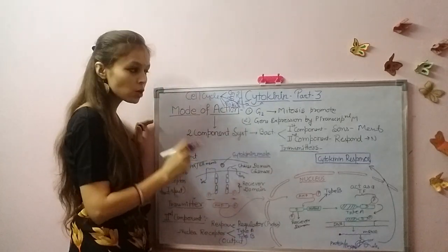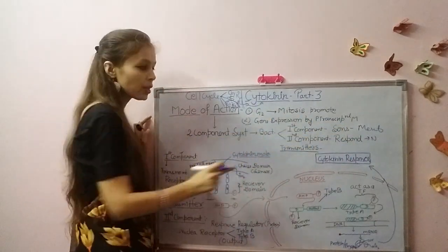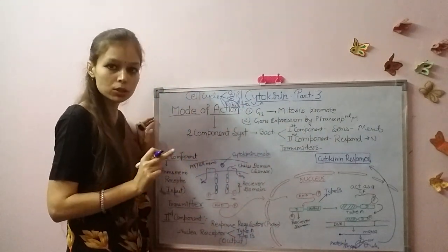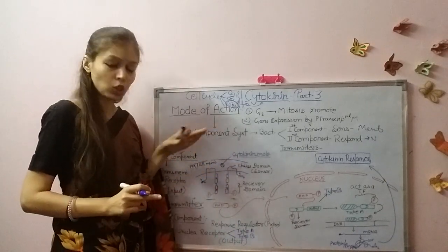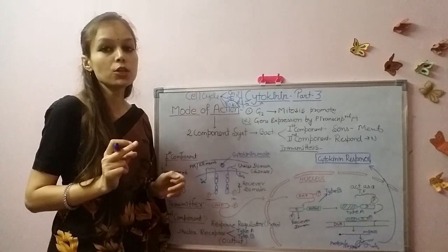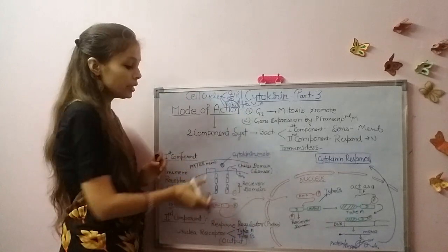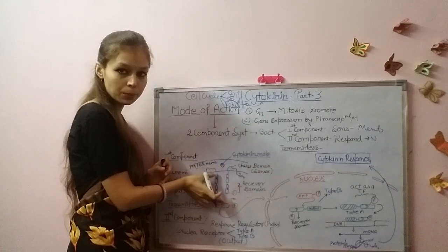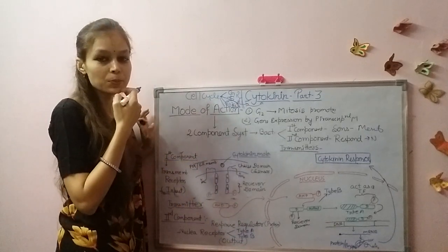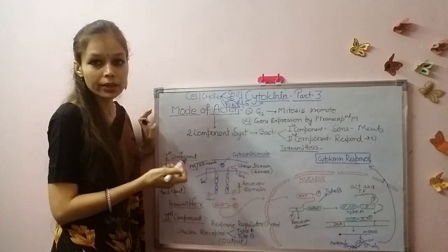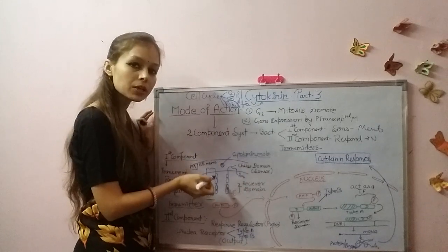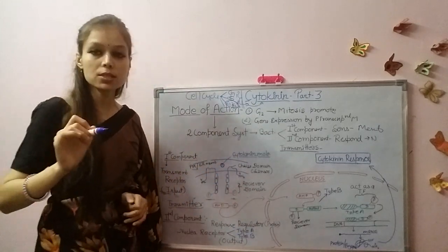Let's start with the first component. The first component is the sensor. The cytokinin molecule is sensed here. This receptor is located either on the plasma membrane or on the endoplasmic reticulum membrane. This is the cytokinin receptor.